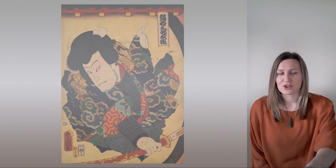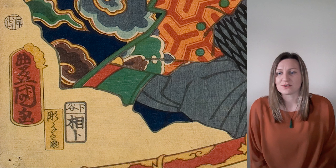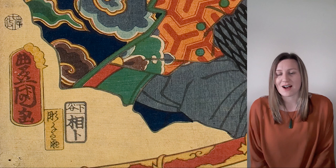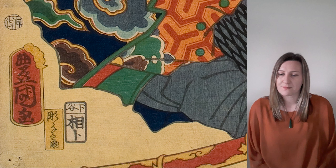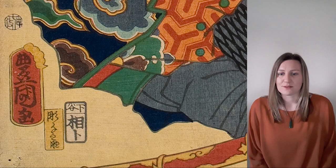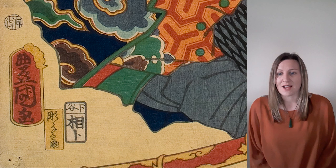One particularly interesting feature of this print is the signature and seals on the bottom left corner. Almost every Ukiyo-e print has an artist's signature, seen here in the red shaped box with the yellow border. Above is a small circle of characters known as the date and censor seal, and below and to the right are the carver seals in yellow and the publisher's seal in white.